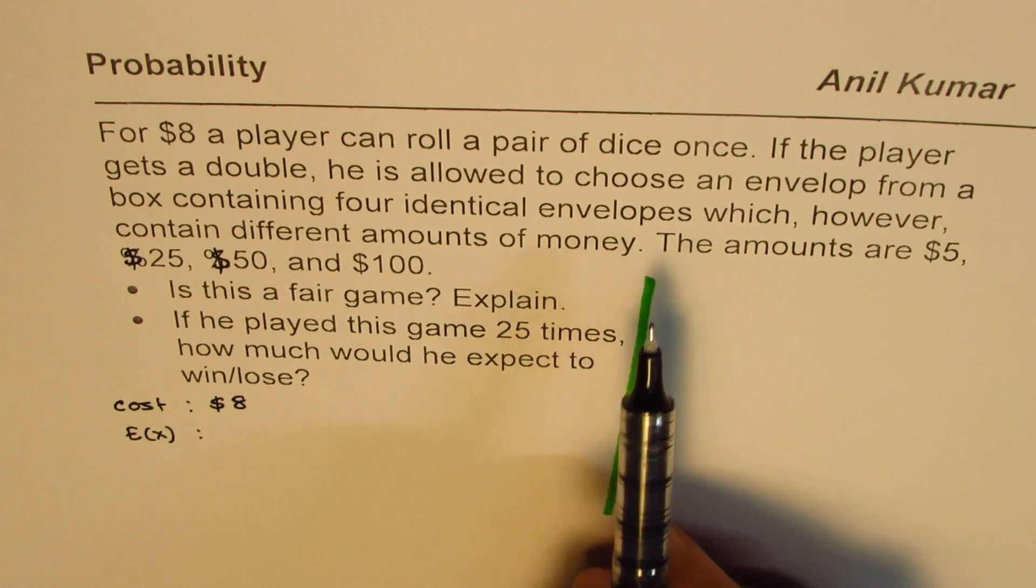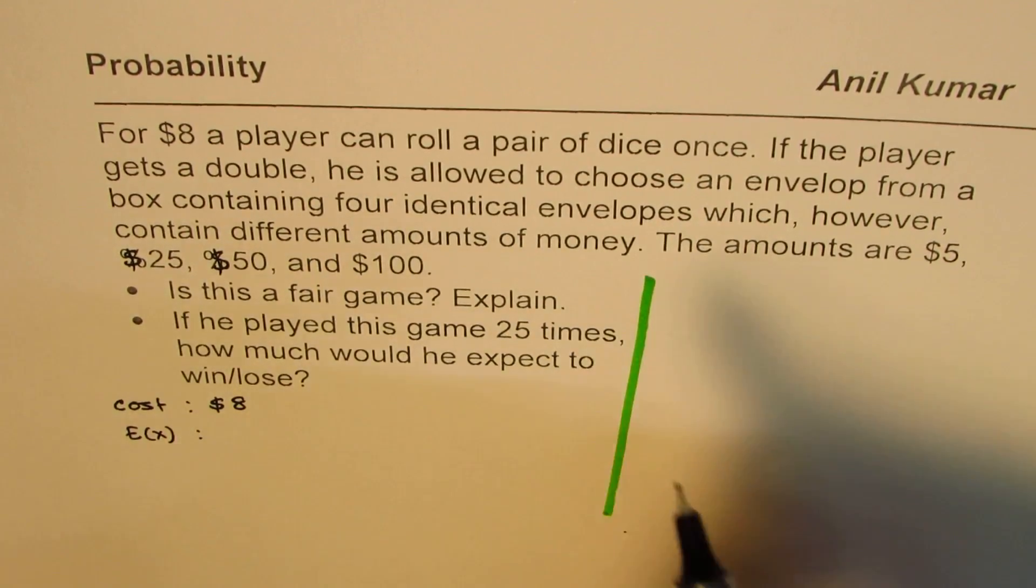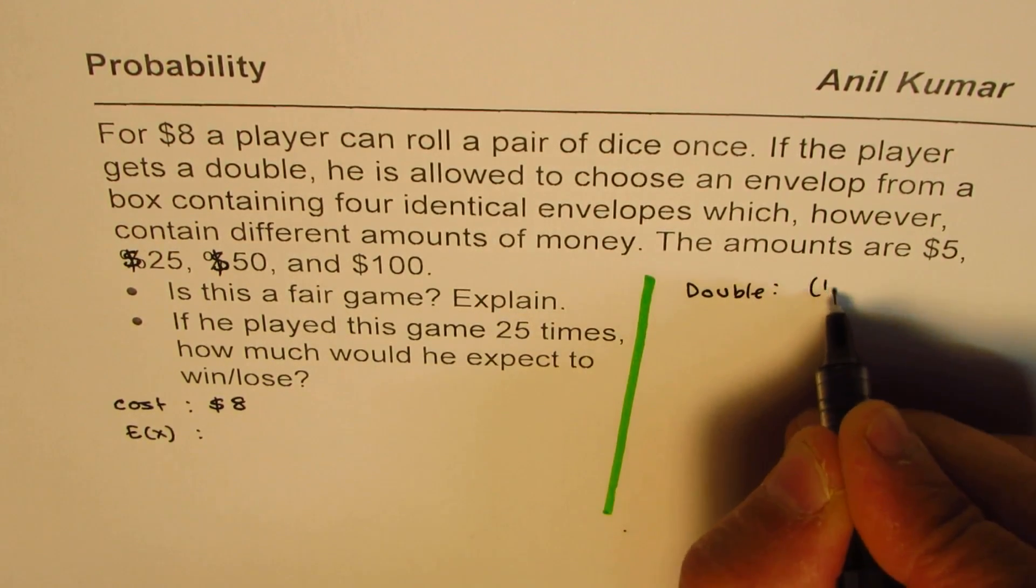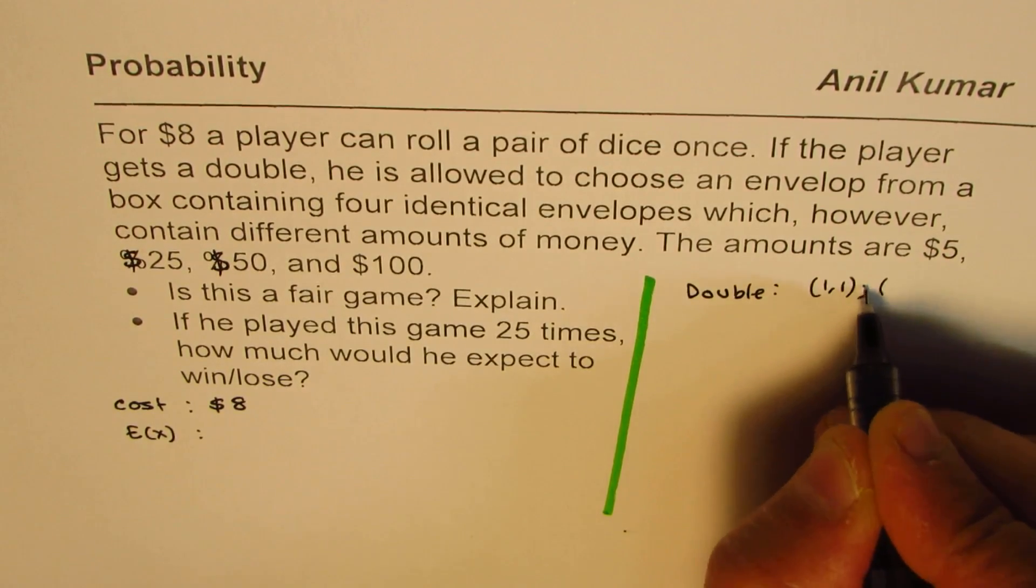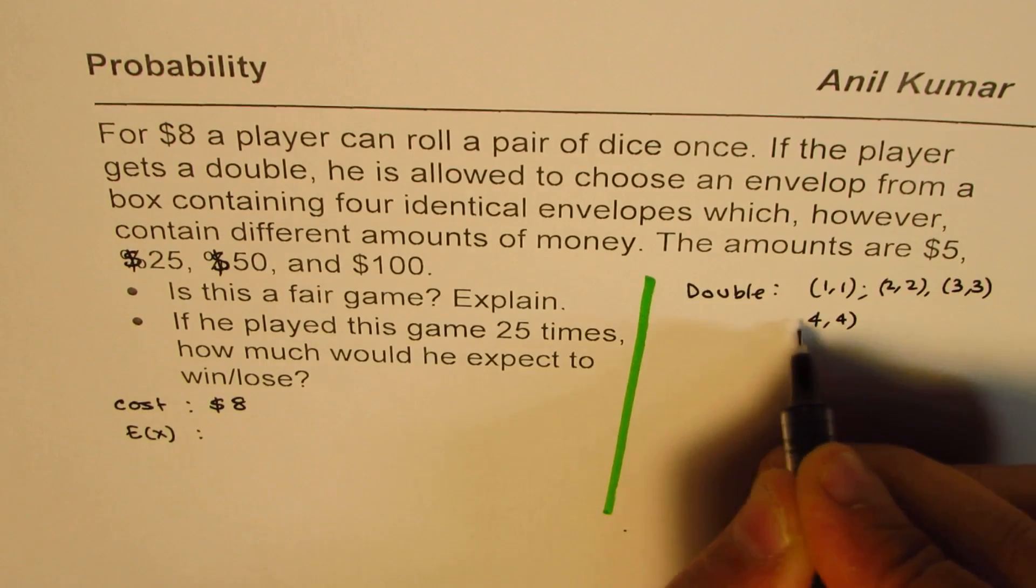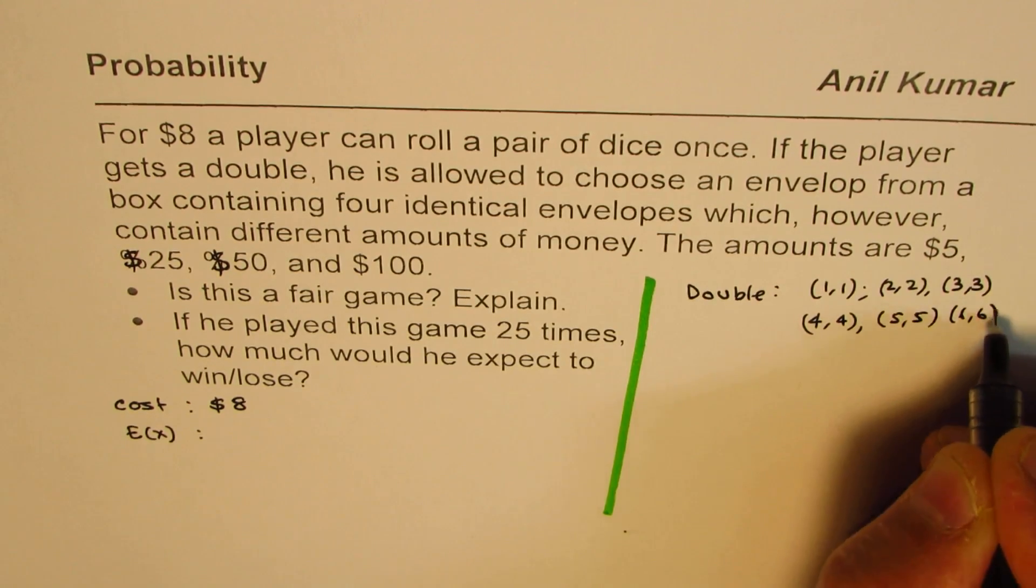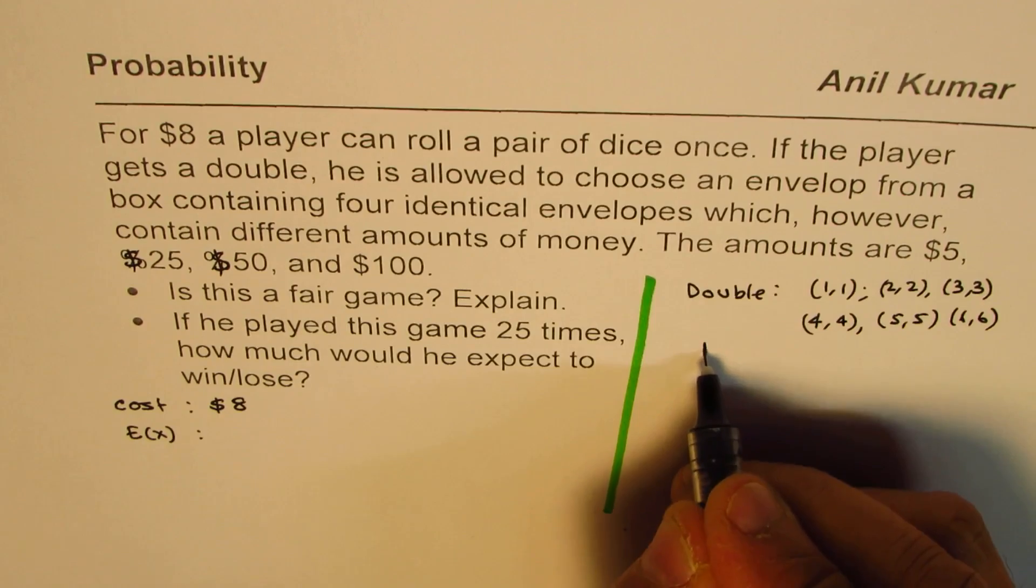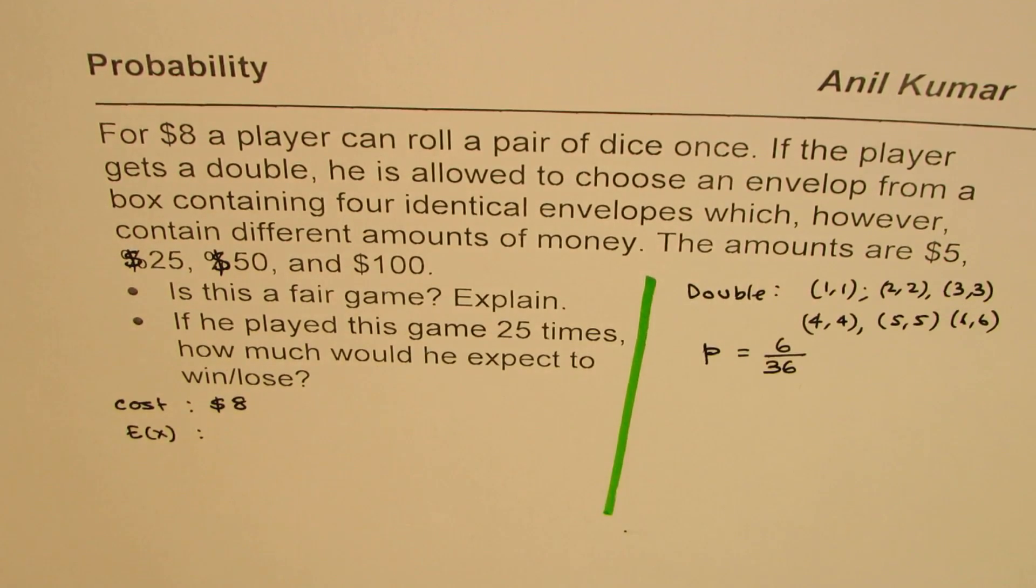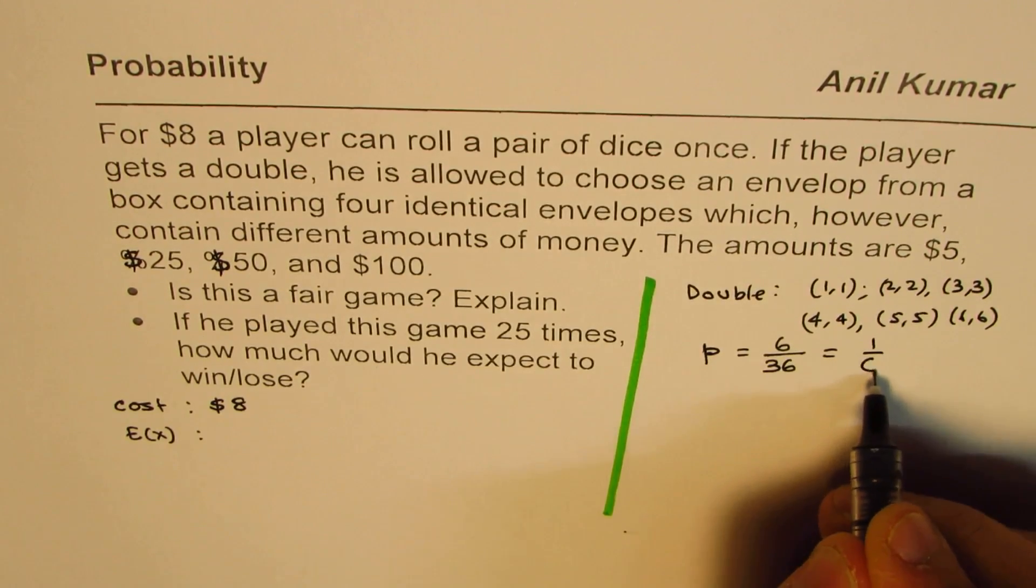So now the first thing is when you roll a pair of dice, what is the probability of getting a double? Now when we say double, it means what? Double means you get 1,1 or you get 2,2 or you could get 3,3, 4,4. So both dice have the same value. Then you have a double. So that is possible. So the probability for this success is 6 out of 36. These are the 6 combinations which is a success out of 36, or you can say 1 out of 6.